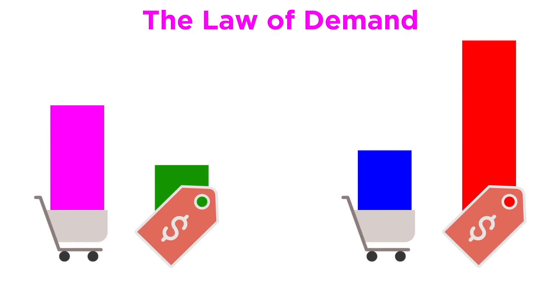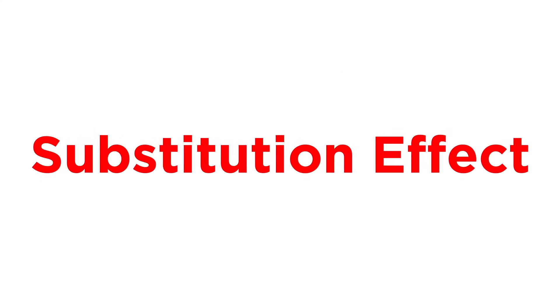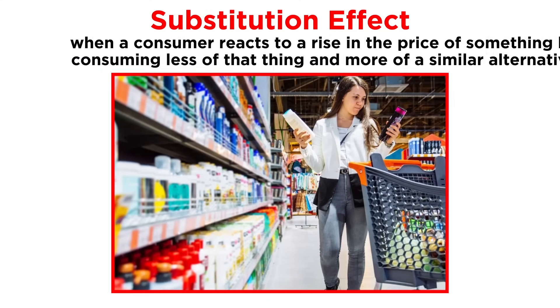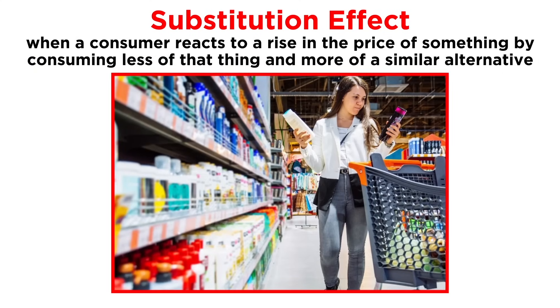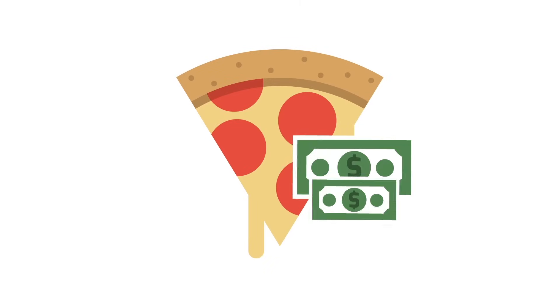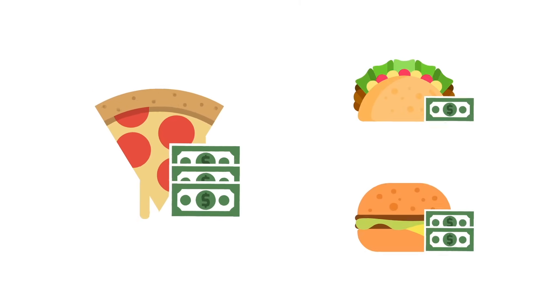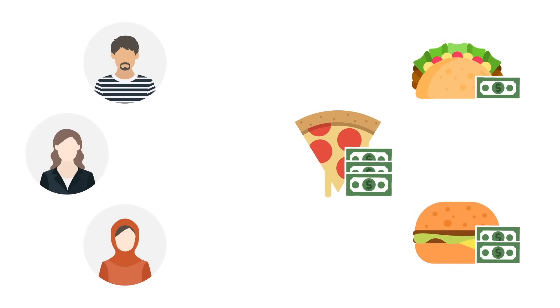There are many variables which can influence demand. One such variable is known as the substitution effect, which takes place when a consumer reacts to a rise in the price of something by consuming less of that thing and more of a similar alternative, which we can refer to as a substitute. For example, when the price of pizza becomes more expensive compared with other foods, consumers become more likely to buy a substitute food item, like tacos or hamburgers.